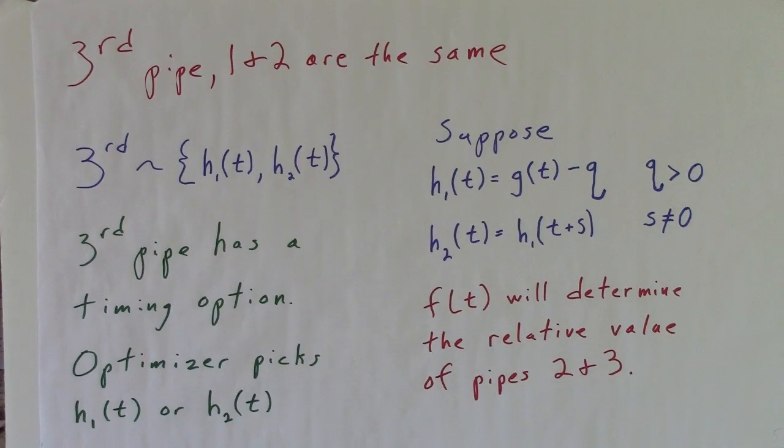Now let's add a third pipe maintaining the one-pipe maximum constraint. The third pipe has a timing option, so the optimizer picks h1 of t or h2 of t. Suppose h1 of t is equal to g of t minus q for some q larger than 0, and h2 of t is equal to h1 of t plus s for some s not equal to 0.